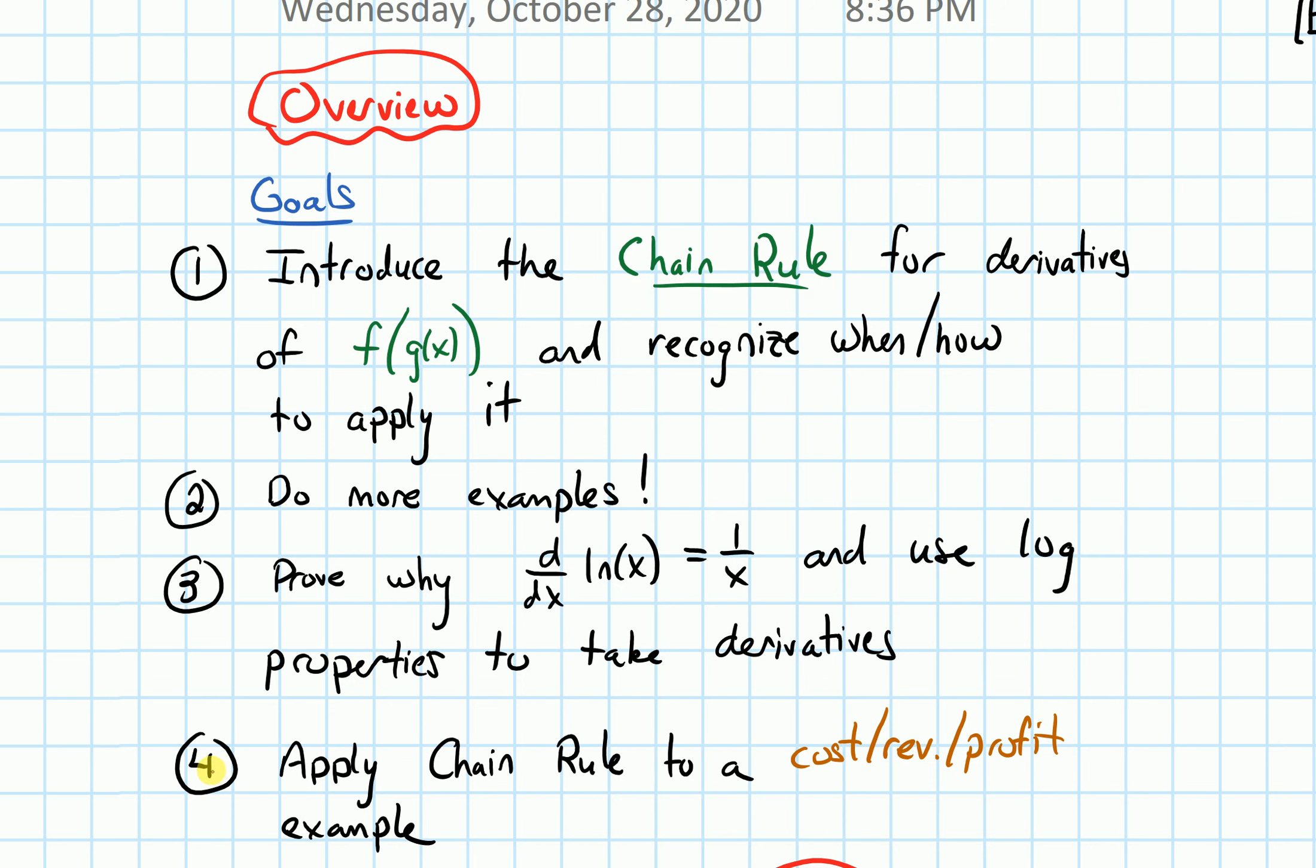Finally, we'll do an application example involving the chain rule applied to a cost, revenue, profit problem.